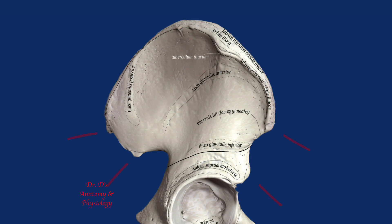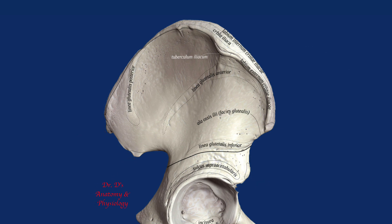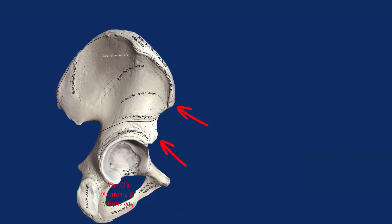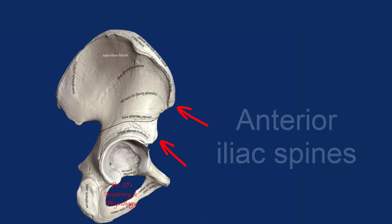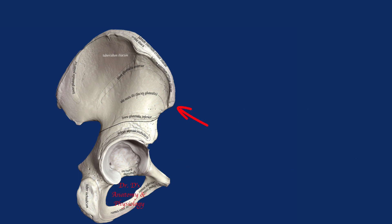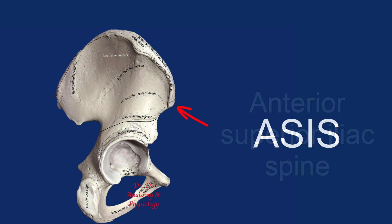Projecting from the ileum, there are four spines. These spines are not that dramatic or obvious, but they are called spines nevertheless. Two of the spines on the anterior side will be called the anterior iliac spines. The superior one of the two is called the anterior superior iliac spine, which is a mouthful, but it can be abbreviated to its acronym ASIS.